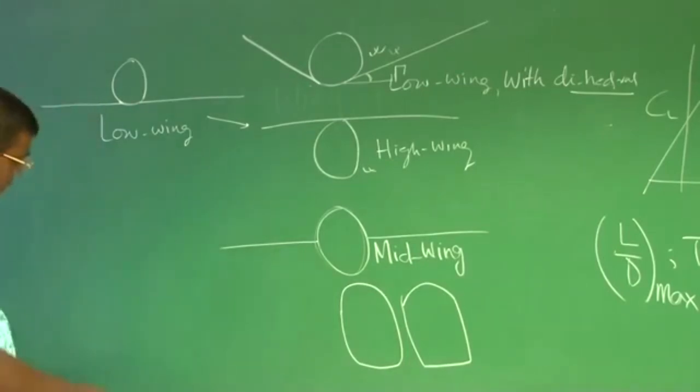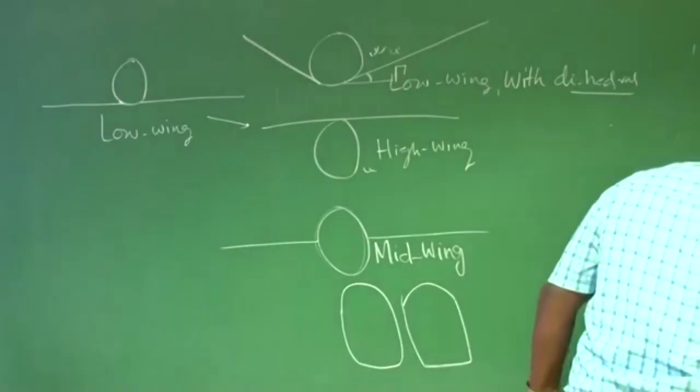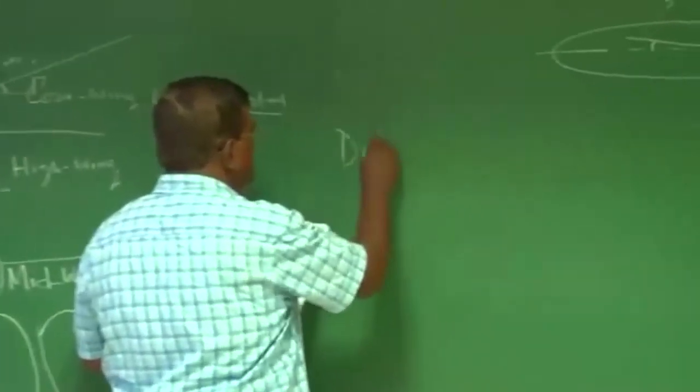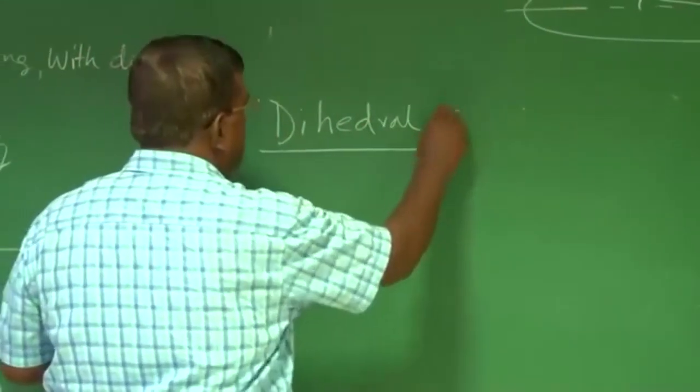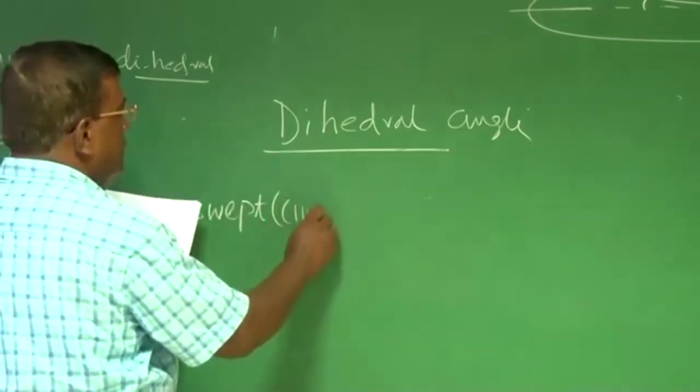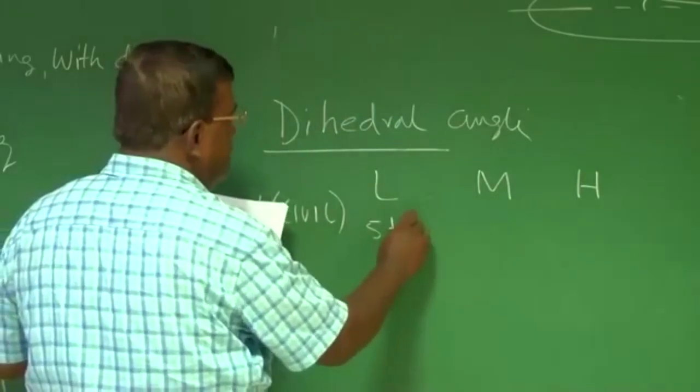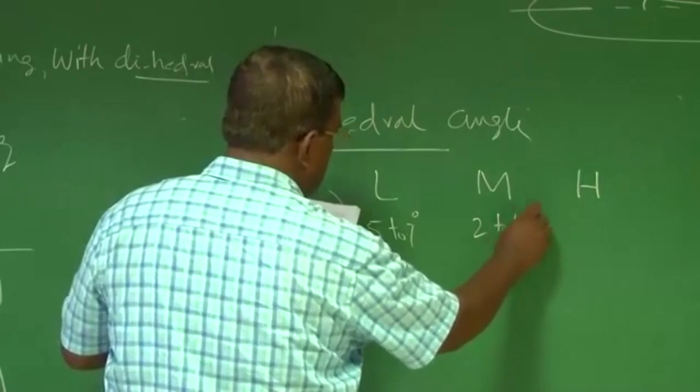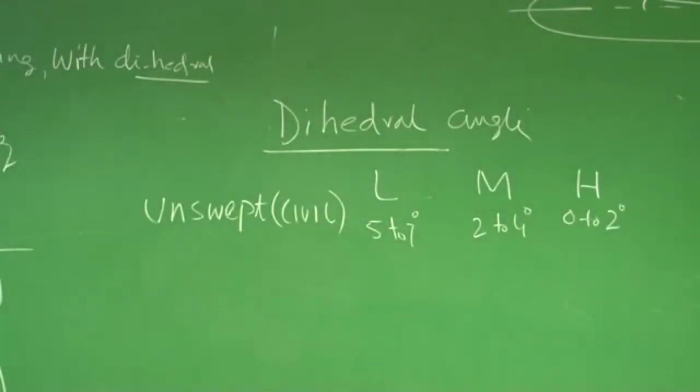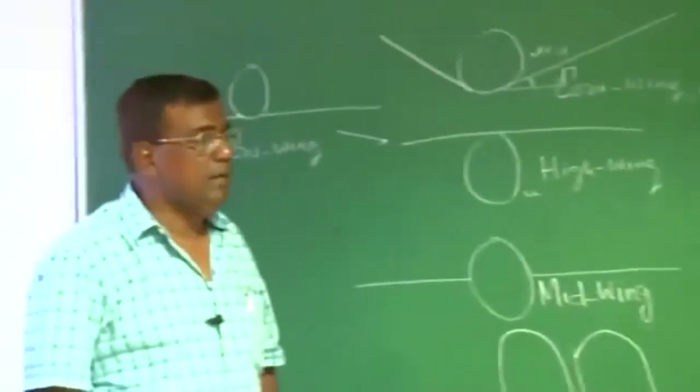When I talk about dihedral, it is important at this stage because we are preparing ourselves for conceptual design. It is important at this stage to have feel for some numbers which are historical based. So if I write dihedral angle for unswept civil airplane for low wing, typically 5 to 7 degrees, for mid-wing 2 to 4 degrees. In fact, for high wing, you may not require any dihedral.